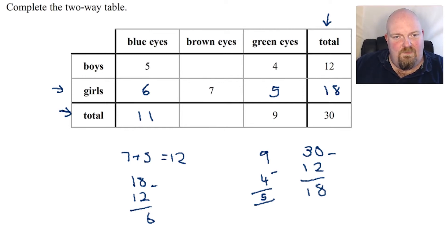Let's maybe have a look and finish the boys row off. So five add four is nine, and I've got 12 all together, so there must be three. I then look at that, and I can say that three add seven is 10.